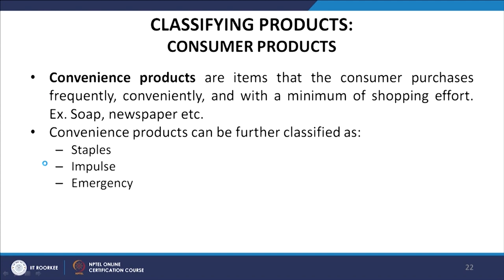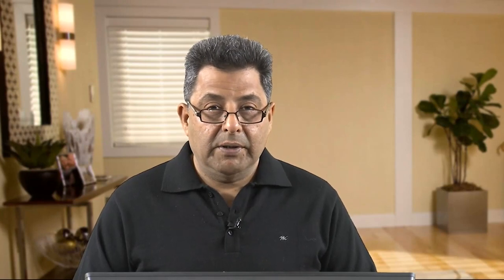Convenience products are items that the consumer purchases frequently, conveniently, and with a minimum of shopping effort — for example, soaps and newspapers. Convenience products can be further classified as staples, impulse, or emergency. Staples are convenience goods consumers purchase on a regular basis, such as Heinz ketchup or toothpaste. Impulse goods are purchased without any planning or search effort, like chocolates, magazines, and toffees.